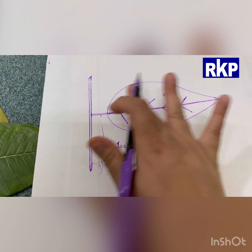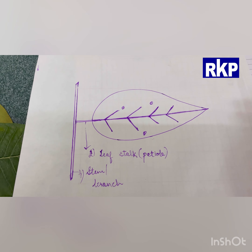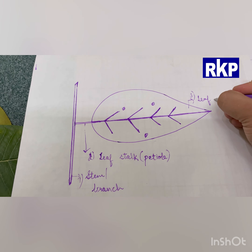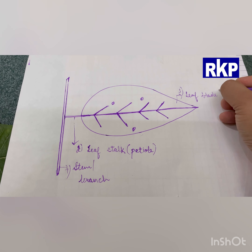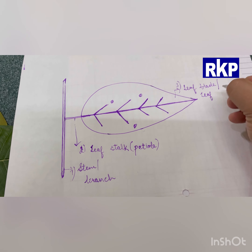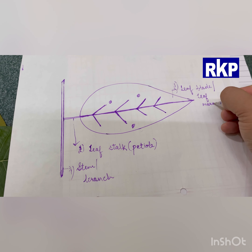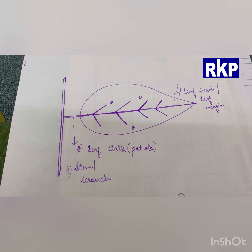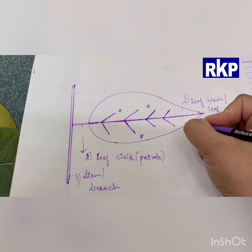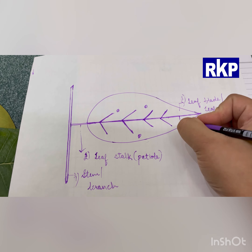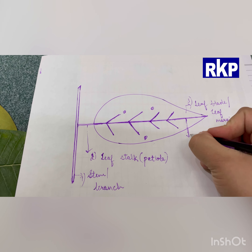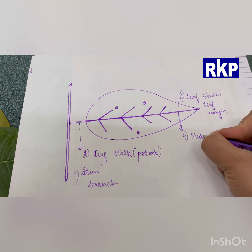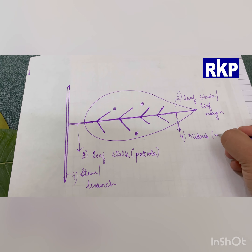The full flat surface of the leaf is known as the leaf blade. This middle pipeline structure — the pipeline structure running through the middle of the leaf — is known as the midrib, and the other name is the main vein.